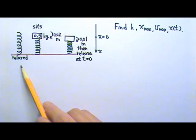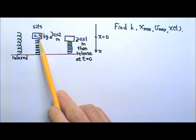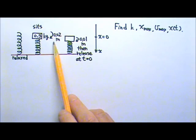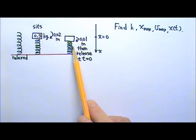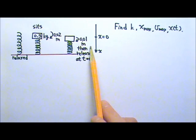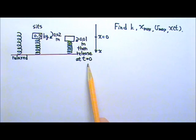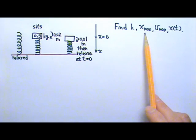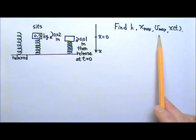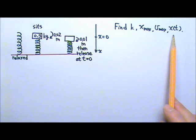This is a relaxed Hooke's Law spring. When a 0.3 kg box sits on top, the spring is compressed by 0.02 m. The box is then pushed further into the spring for 0.01 m, and then released from rest and set into oscillation at t equals 0. Find the spring constant k, the amplitude of the oscillation, the maximum speed of the box during oscillation, and the position as a function of time.